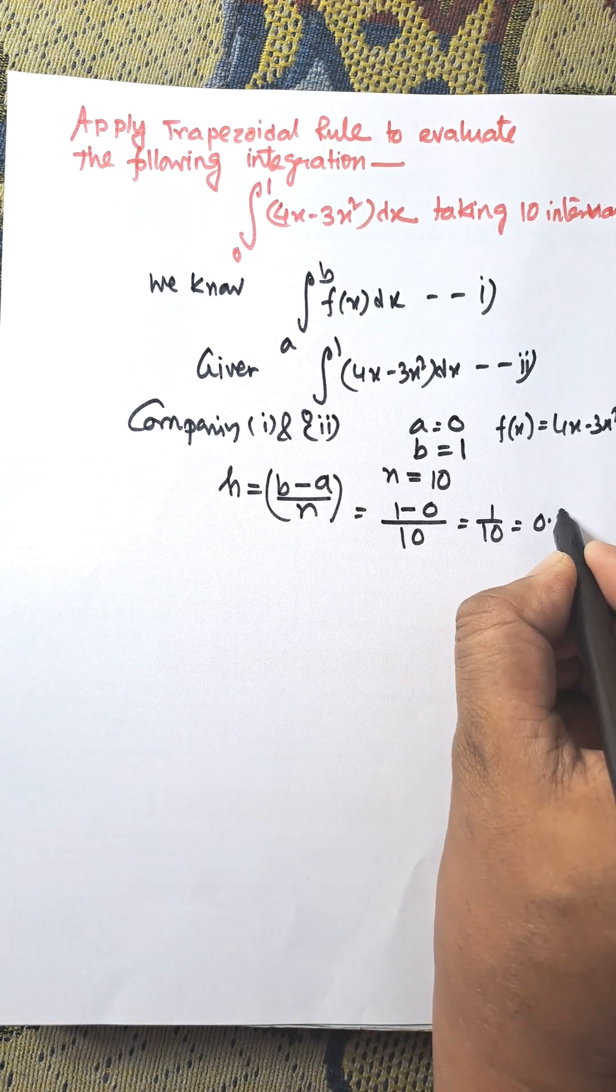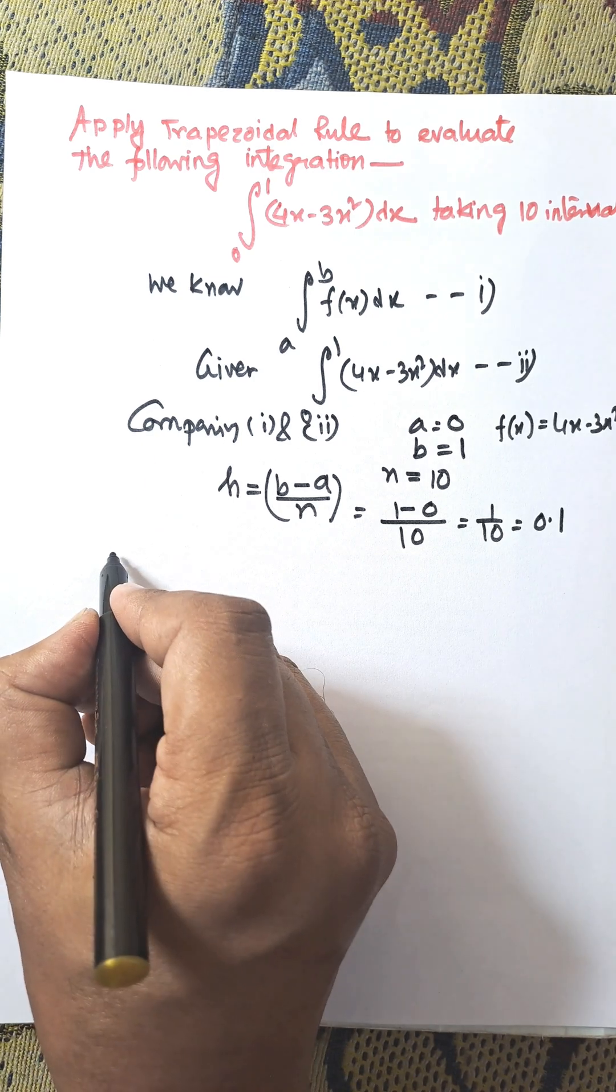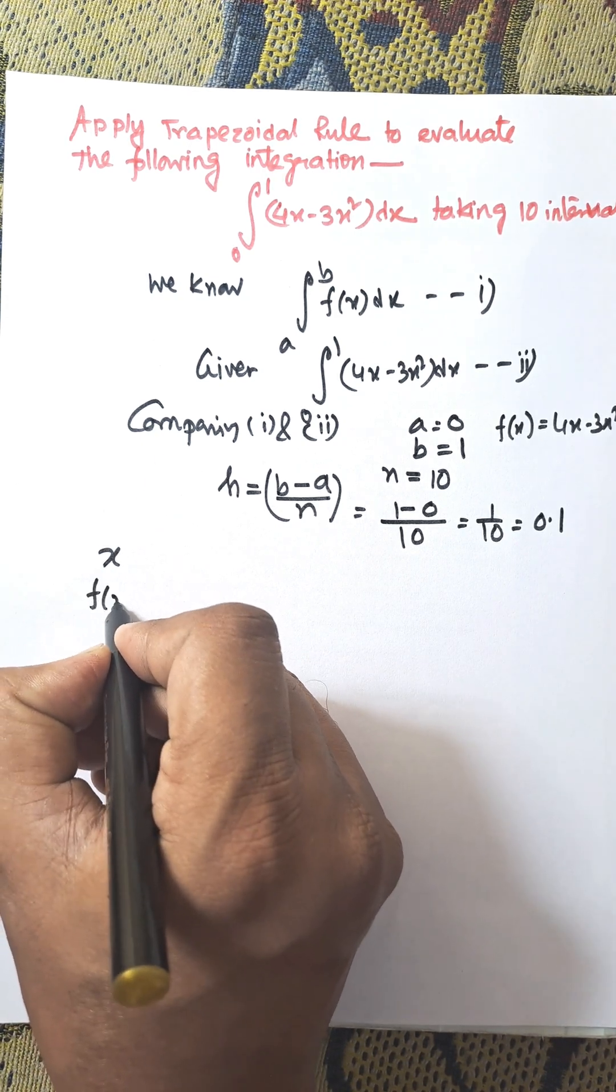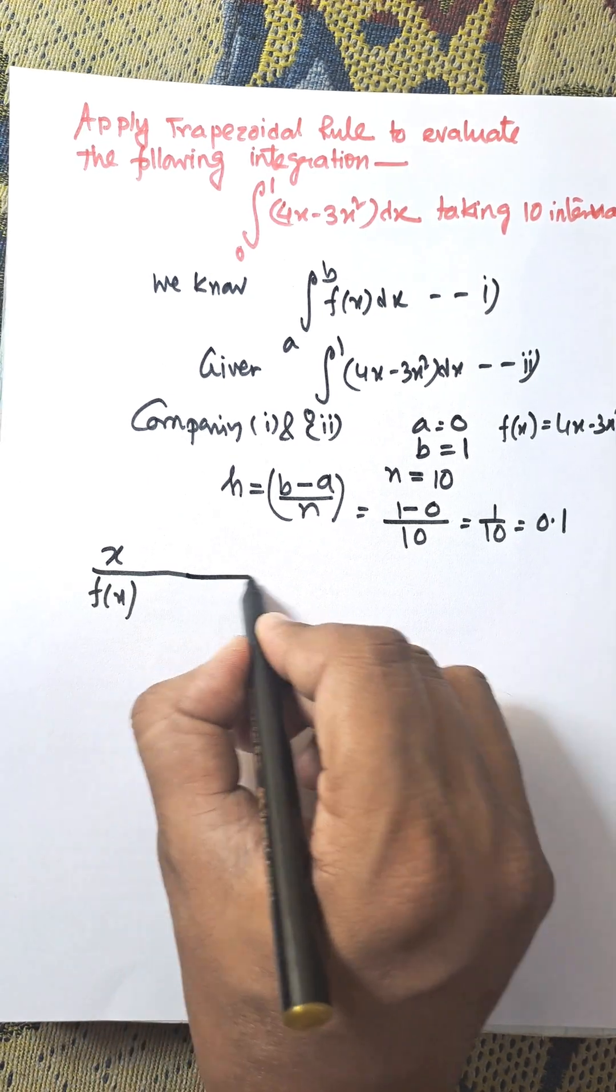Now we need to create a table for x and f(x). This column is x and this column is f(x).